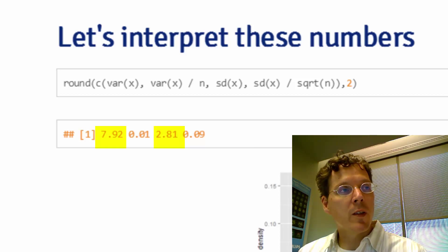I like 2.81 in this case over 7.92 because 7.92 is expressed in inches squared, and 2.81 is expressed in inches, so I like to work in the units rather than the units squared.